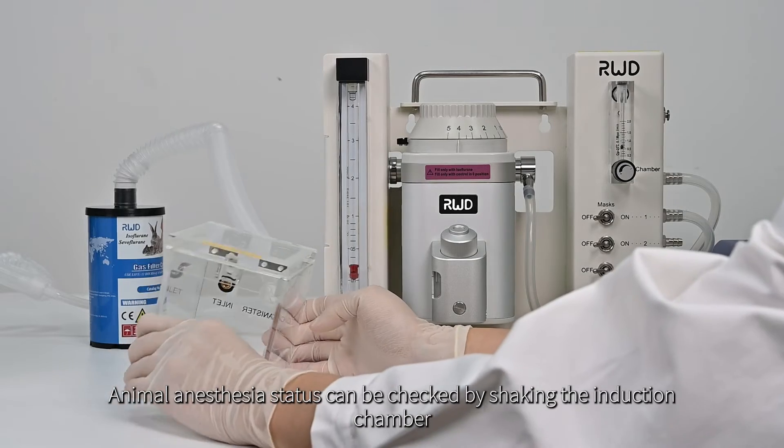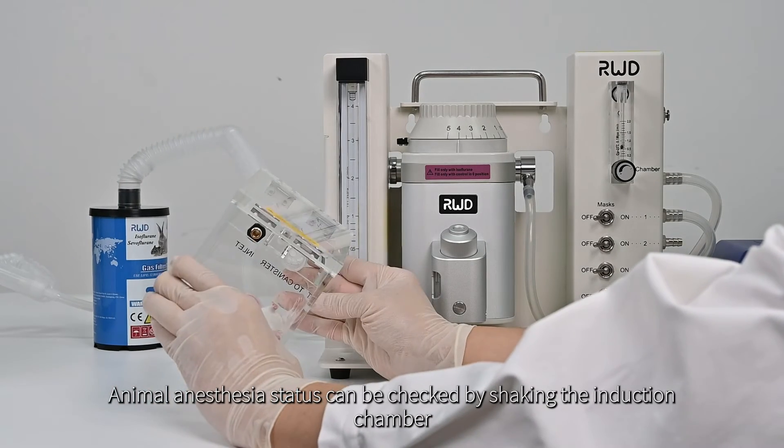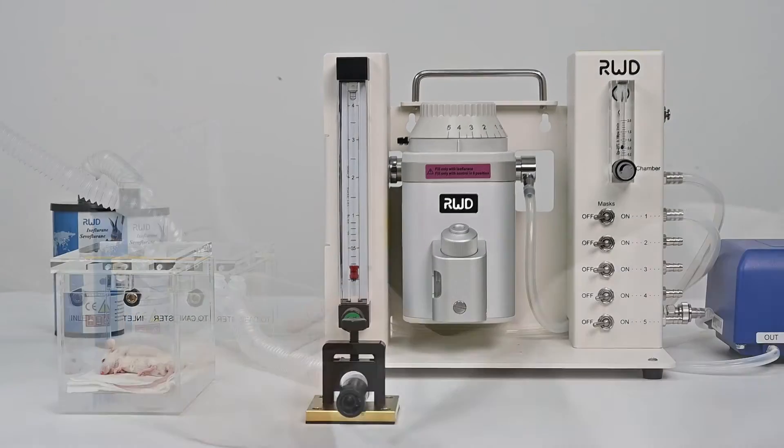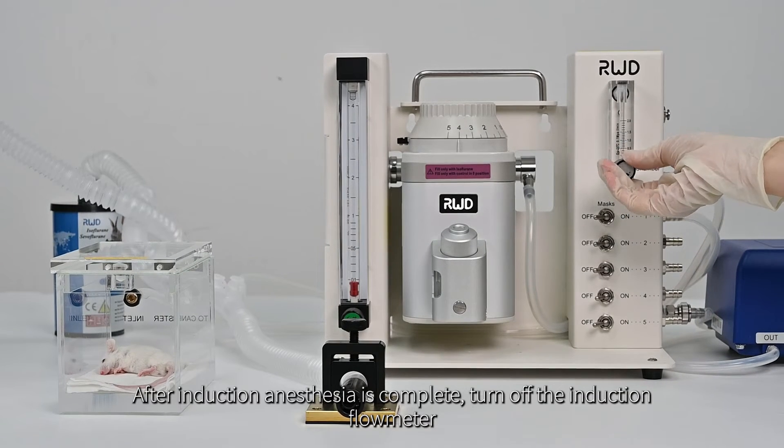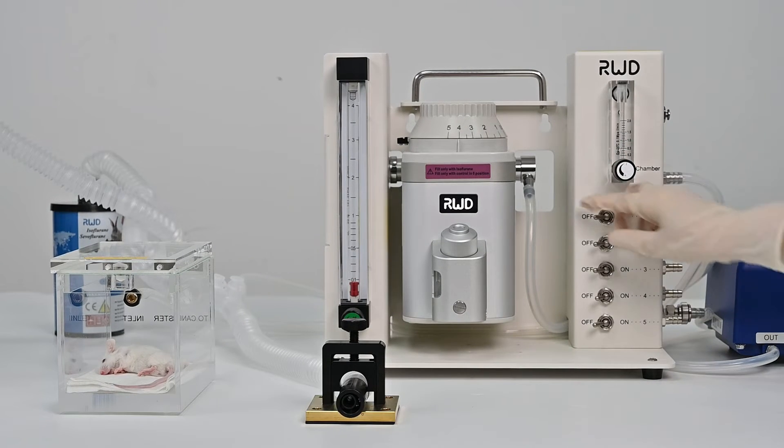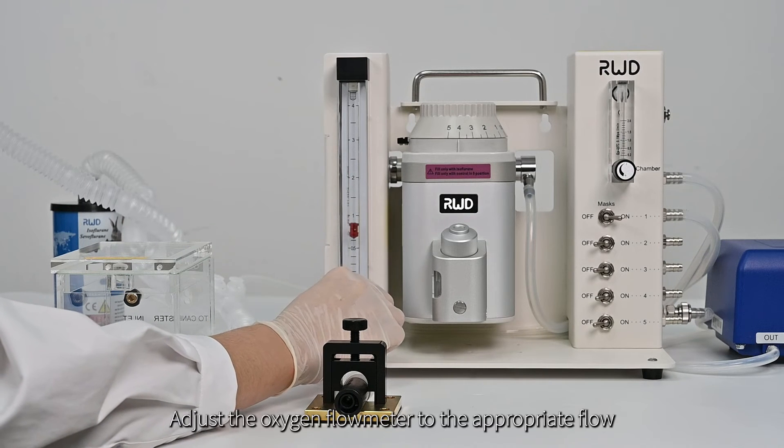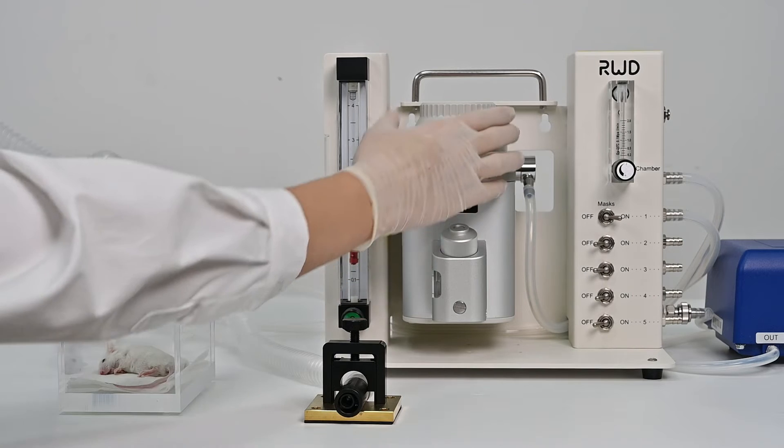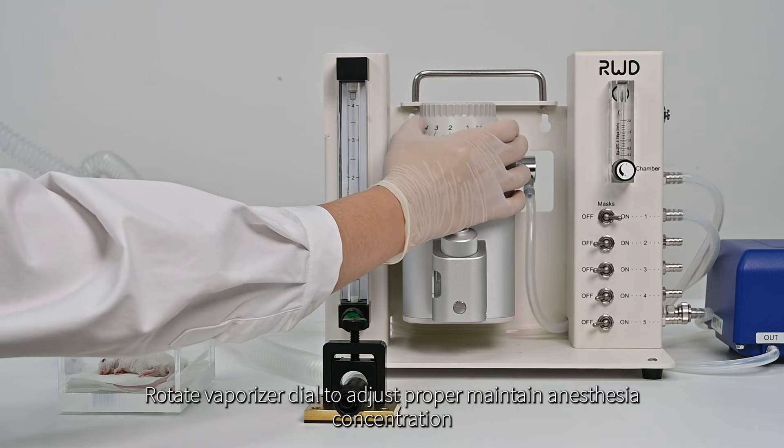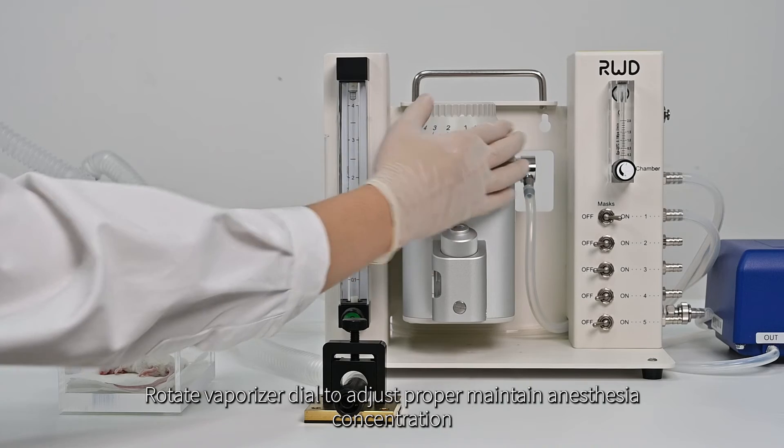Animal anesthesia status can be checked by shaking the induction chamber. After induction anesthesia is complete, turn off the induction flow meter. Open the necessary channel switch. Adjust the oxygen flow meter to the appropriate flow. Rotate vaporizer dial to adjust proper maintain anesthesia concentration.